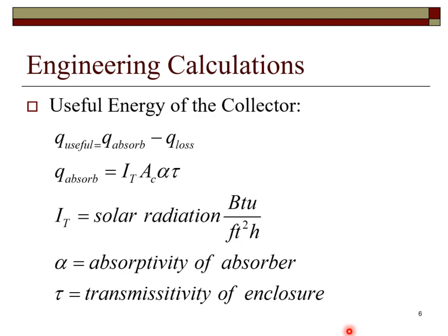Here we begin developing some very useful equations. The useful heat is equal to the heat absorbed minus the heat loss. The heat absorbed is equal to the solar radiation times the area times the absorptivity of the absorber times the transmissivity of the enclosure.